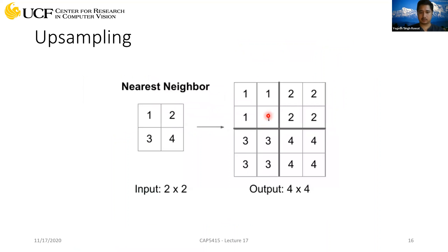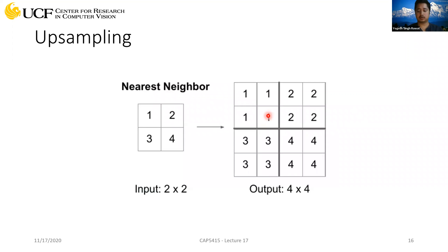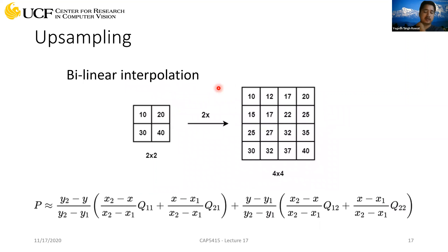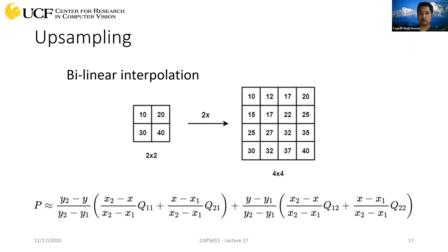So that was the trick. We also talked about how to perform upsampling from low resolution to high resolution. There were simple techniques like Nearest Neighbor, and we also discussed Bilinear Interpolation. There was a question about how exactly this is done, and we clarified that. We can use this interpolation for upsampling.